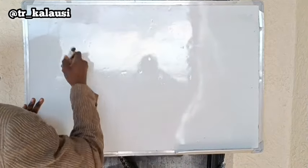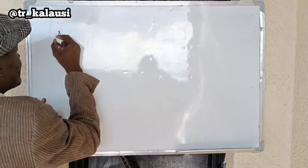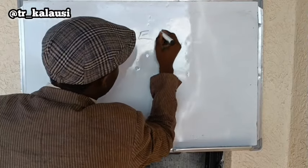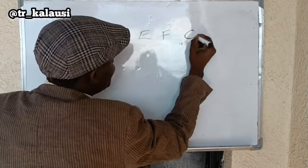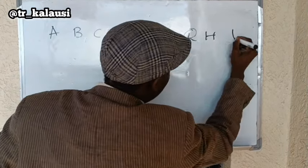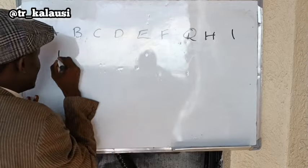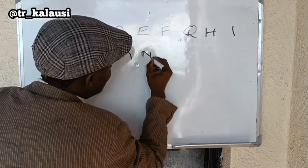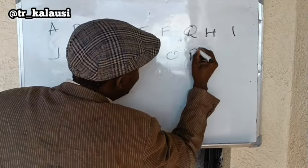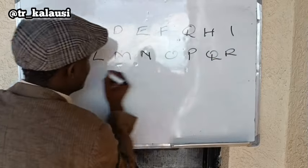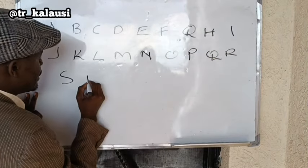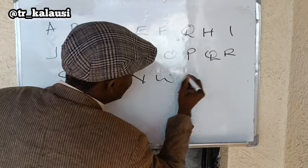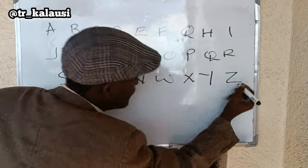First, let's write the alphabet down. We have A, B, C, D, E, F, G, H, I, J, K, L, M, N, O, P, Q, R, S, T, U, V, W, X, Y, Z.